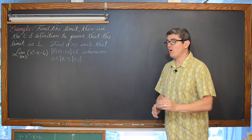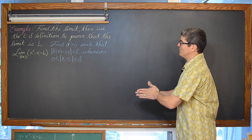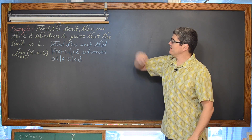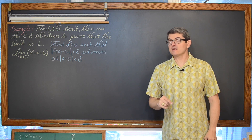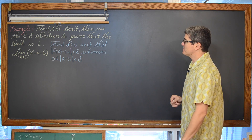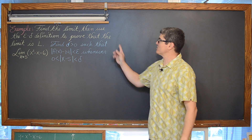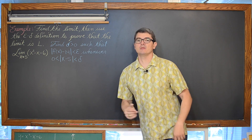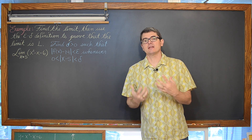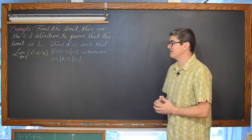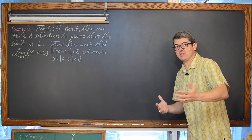Getting on to that quadratic example. Find the limit, then use the epsilon-delta definition to prove that the limit actually is that L — that real limit that you believe it to be.